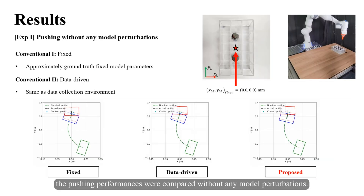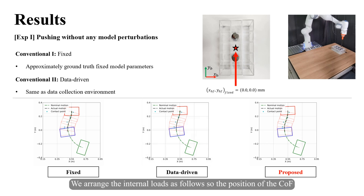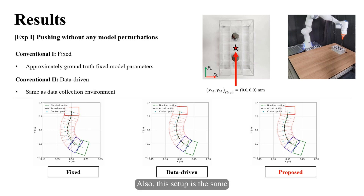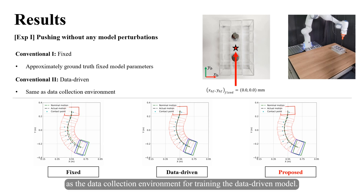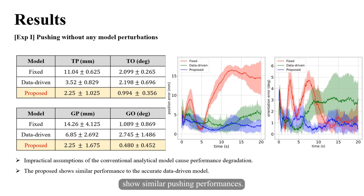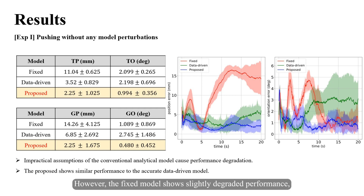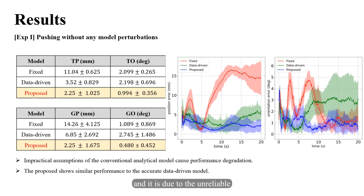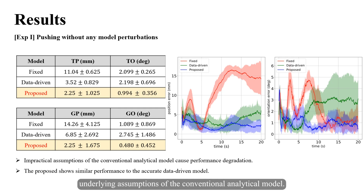In the first experiment, pushing performances were compared without any model perturbations. We arranged the internal loads so the position of the center of friction can be approximated to zero, which is also the same setup as the data collection environment for training the data-driven model. The data-driven and proposed online estimated model show similar pushing performances. However, the fixed model shows slightly degraded performance due to the unreliable underlying assumptions of the conventional analytical model.